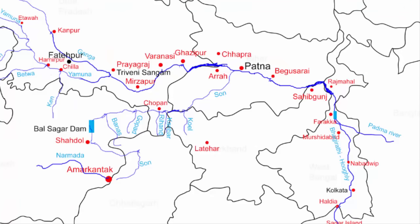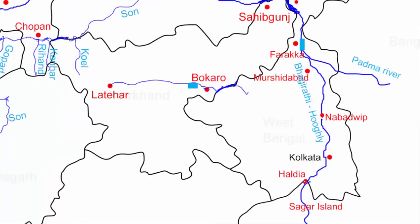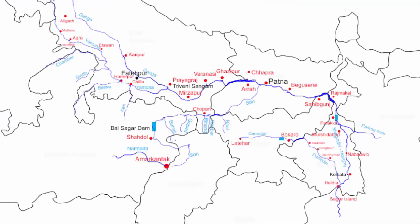The third right bank tributary is the Damodar river. It originates near Chandwa village in Latehar district of central Jharkhand. It flows east towards Bokaro, where it becomes the source of the Tenughat reservoir. The river continues eastward to the eastern border of Jharkhand, flows along the Jharkhand and West Bengal border for about 35 kilometers, then enters West Bengal taking a southeastern course through Asansol, Durgapur, and Bardhaman. Near Bardhaman it turns south and meets the Hooghly river southwest of Kolkata.